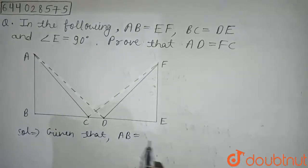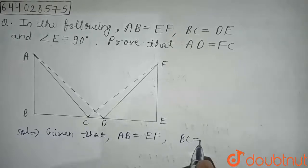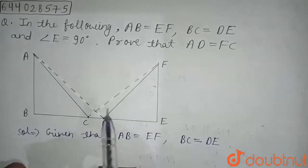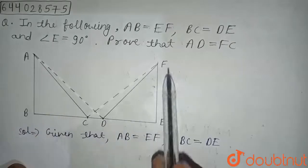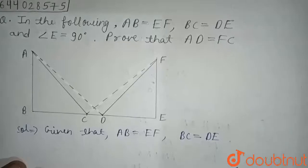AB equals EF and BC equals DE is given in the question.